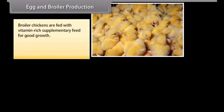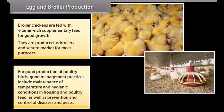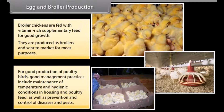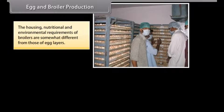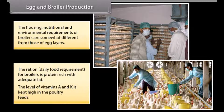Broiler chickens are fed with vitamin-rich supplementary feed for good growth and are produced as broilers sent to market for meat purposes. Good management practices include maintenance of temperature and hygienic conditions in housing and poultry feed, as well as prevention and control of diseases and pests. The housing, nutritional and environmental requirements of broilers are somewhat different from those of egg layers. The daily food ration for broilers is protein-rich with adequate fat, and the levels of vitamins A and K are kept high in poultry feeds.